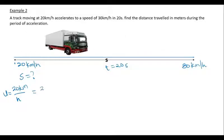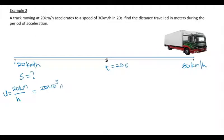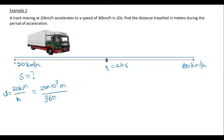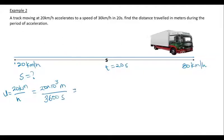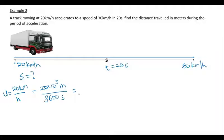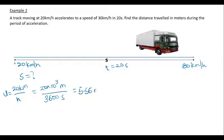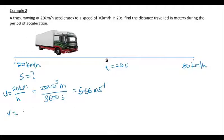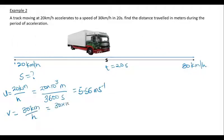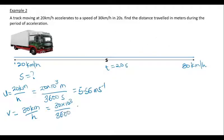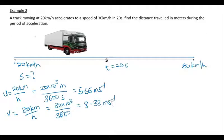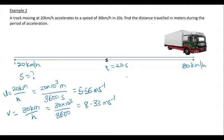Converting 20 km/h to meters per second: 20 × 10³ divided by 3600 seconds, which gives approximately 5.56 m/s — that is our initial velocity. The final velocity of 30 km/h converts as: 30 × 10³ divided by 3600, giving approximately 8.33 m/s.